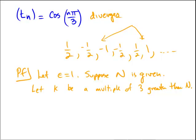let K be a multiple of 3 greater than N. There's lots of multiples of 3 that are bigger than capital N. So just let K be any one of those. So I'm already forcing myself to be either -1 or 1 if I look at T sub K. Okay, so what are we going to look at now?